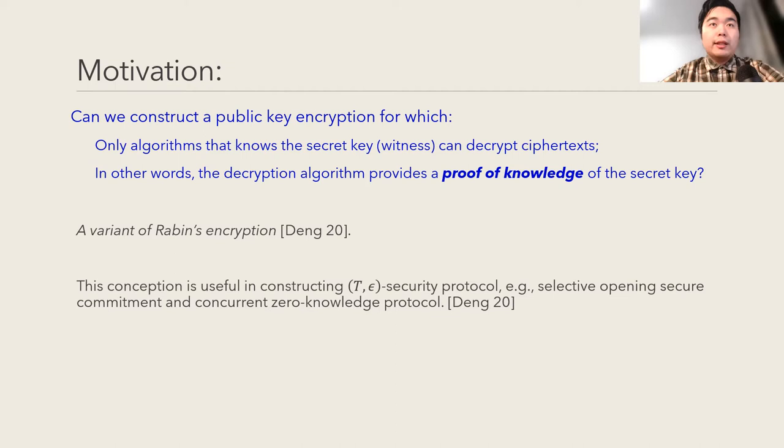Now, we have a question. Can we construct a public key encryption for which only algorithms that know the secret key can decrypt the ciphertext? In other words, the decryption algorithm implies a proof of knowledge of the secret key. Unfortunately, most existing encryption schemes fail to satisfy this requirement without knowledge assumptions.